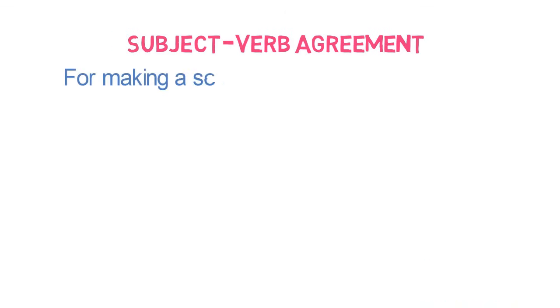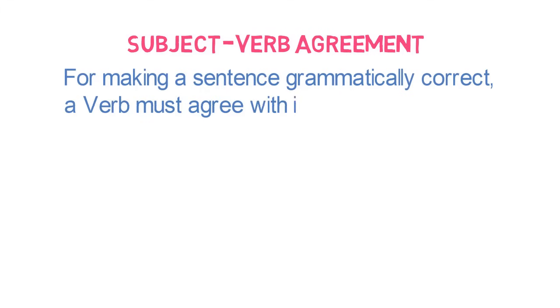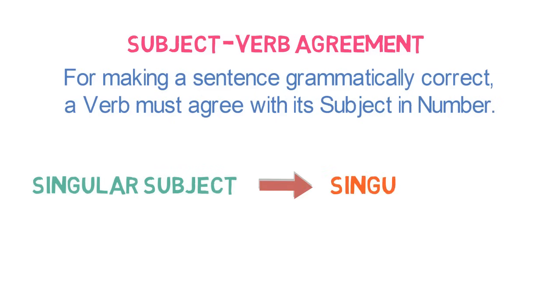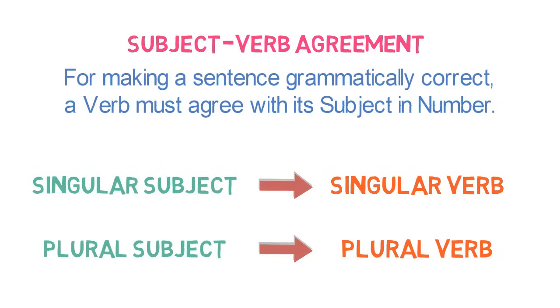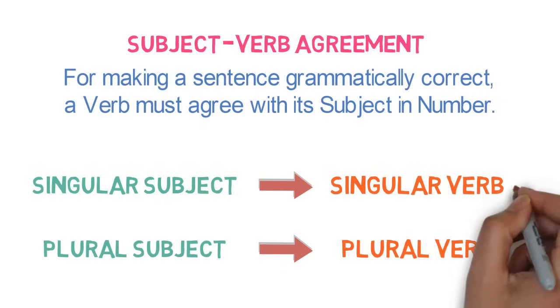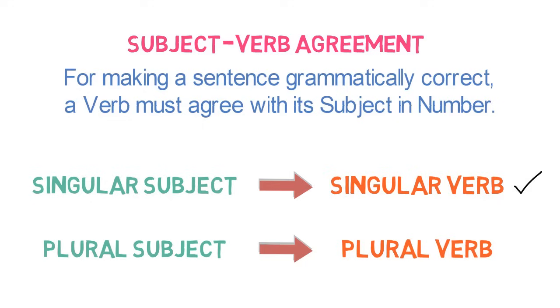For making a sentence grammatically correct, a verb must agree with its subject in number. That is to say, in any sentence, singular subject must have singular verb and plural subject must have plural verb. This is the most general rule.